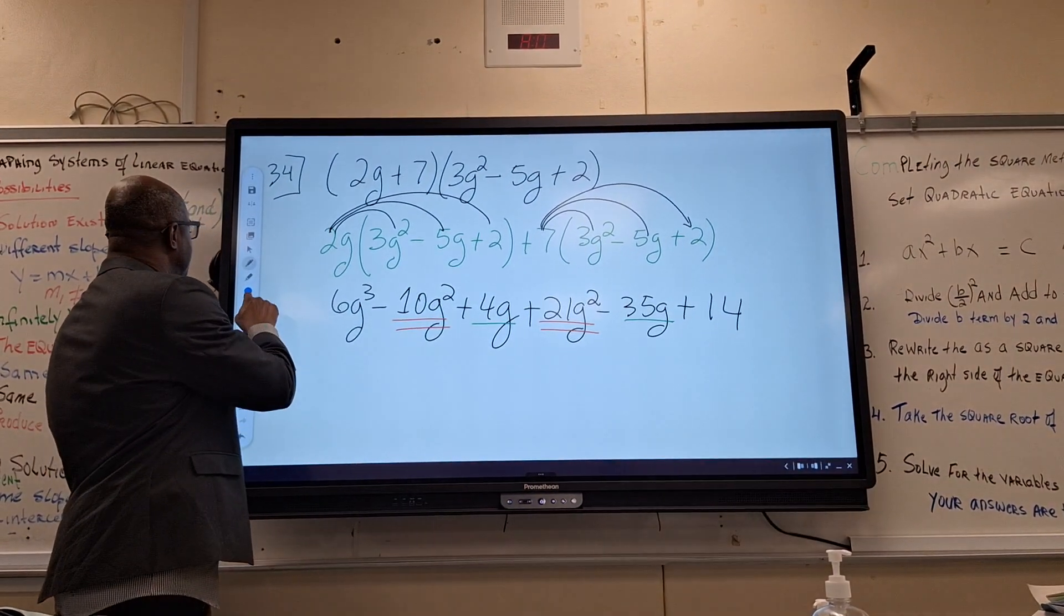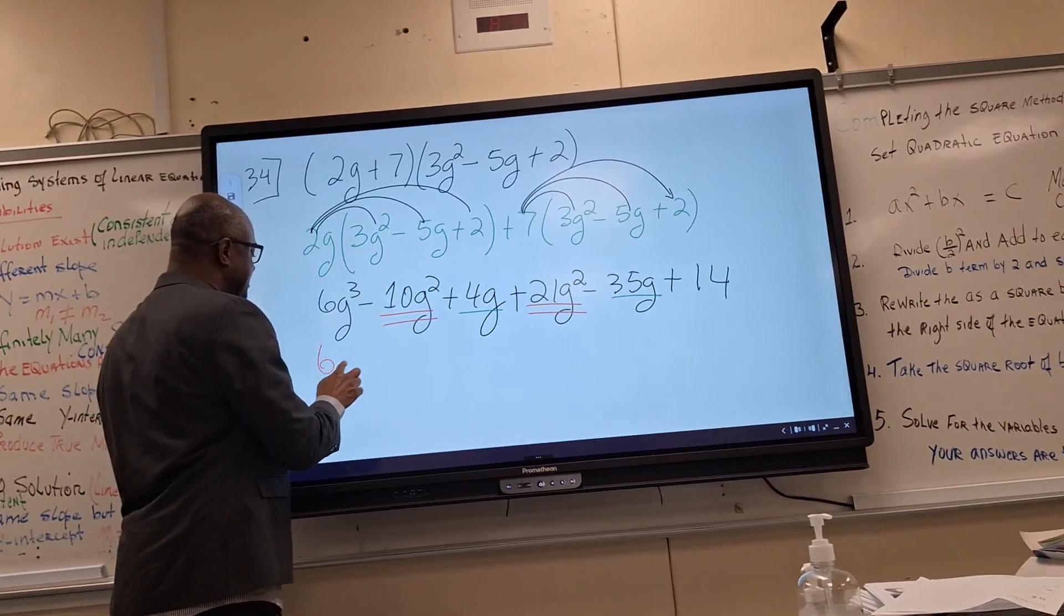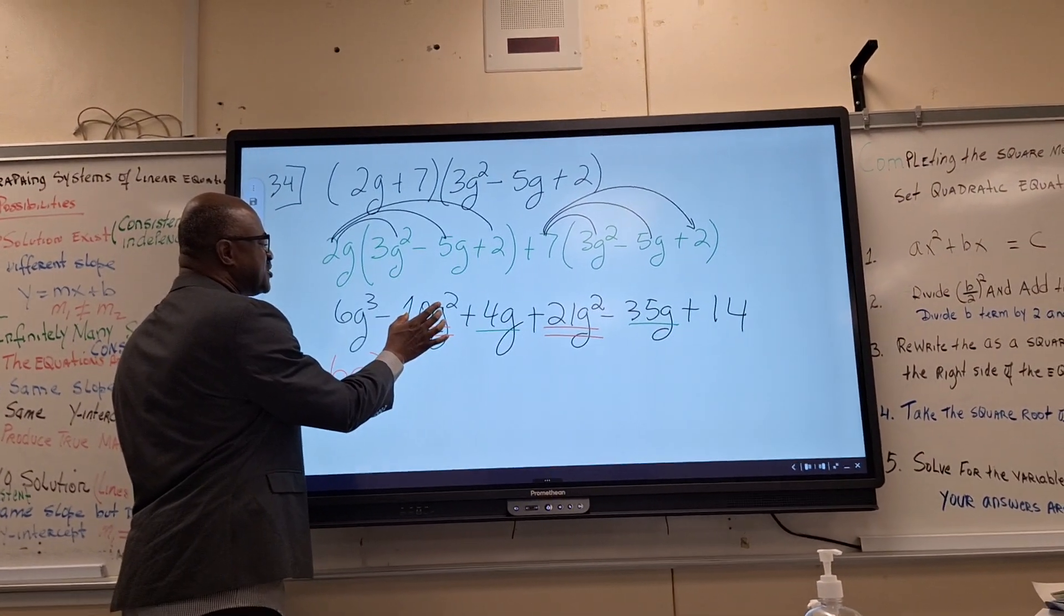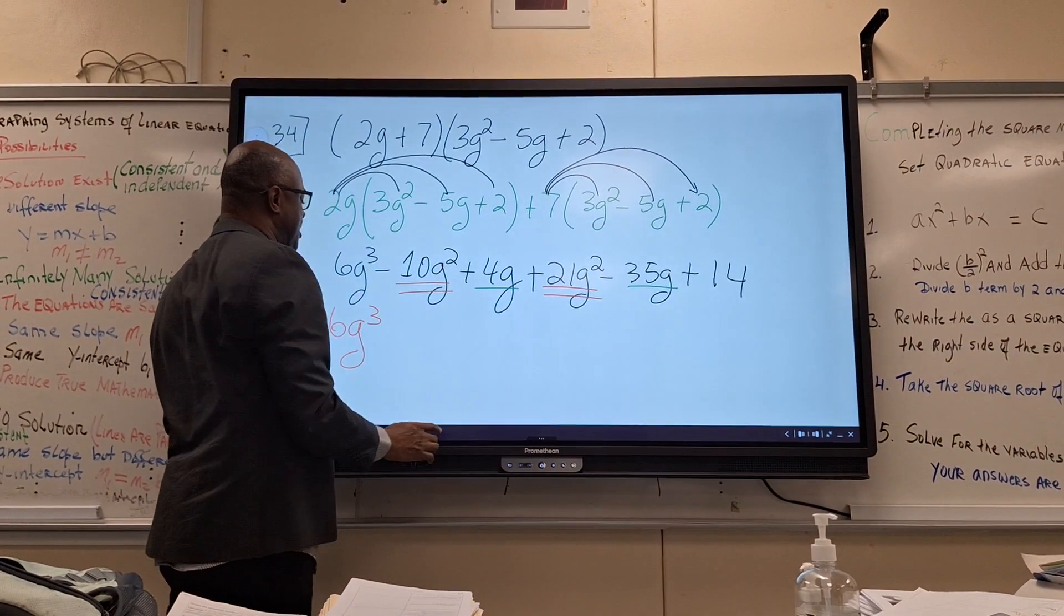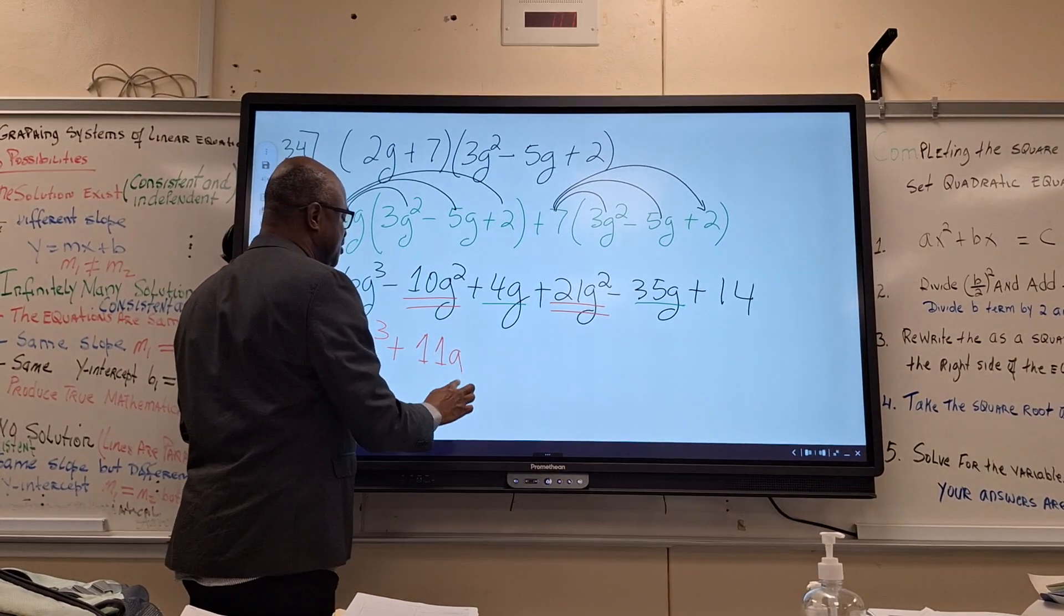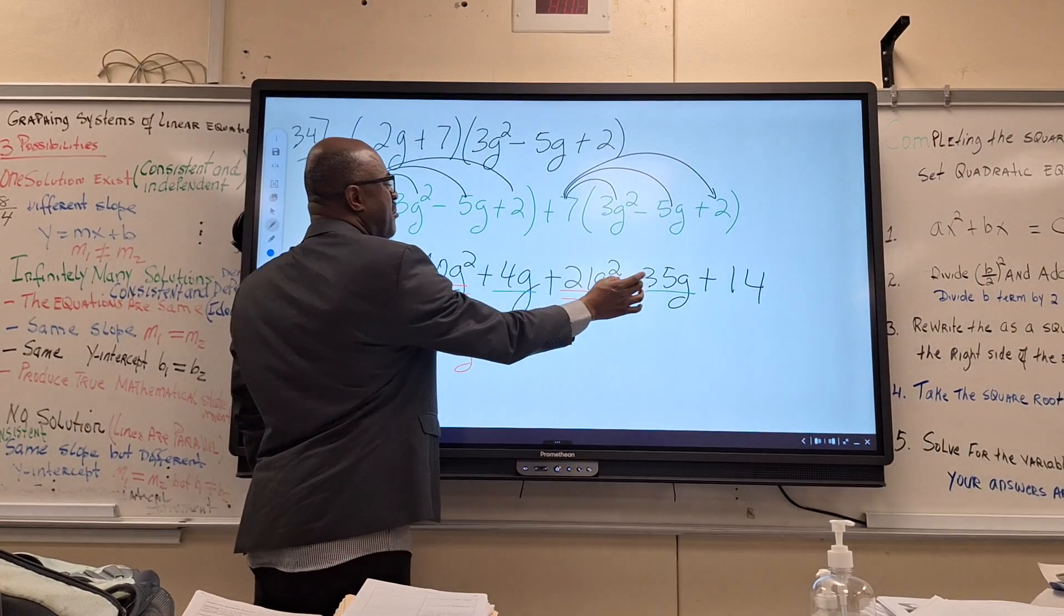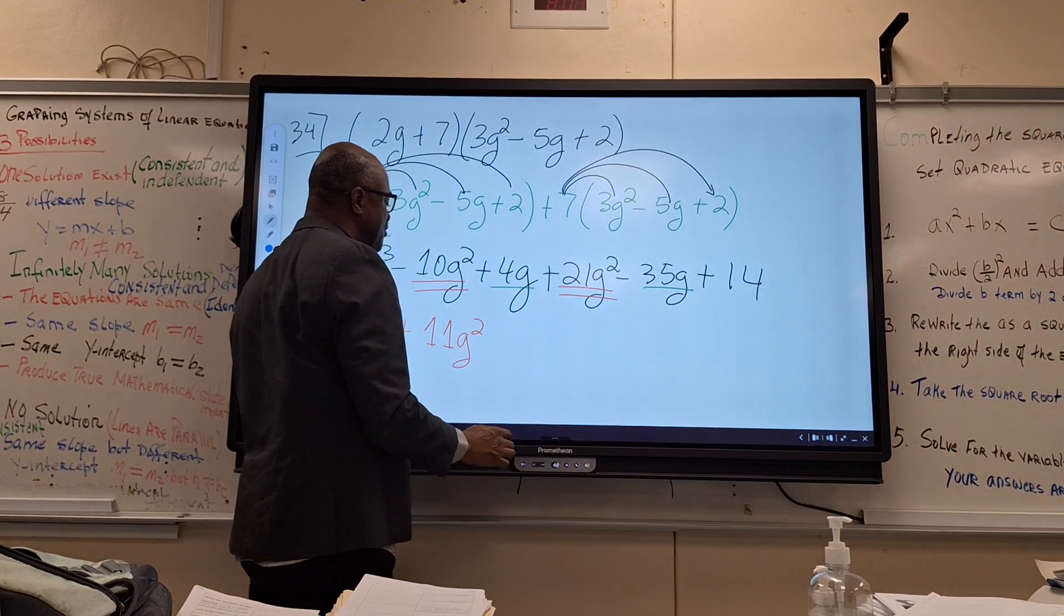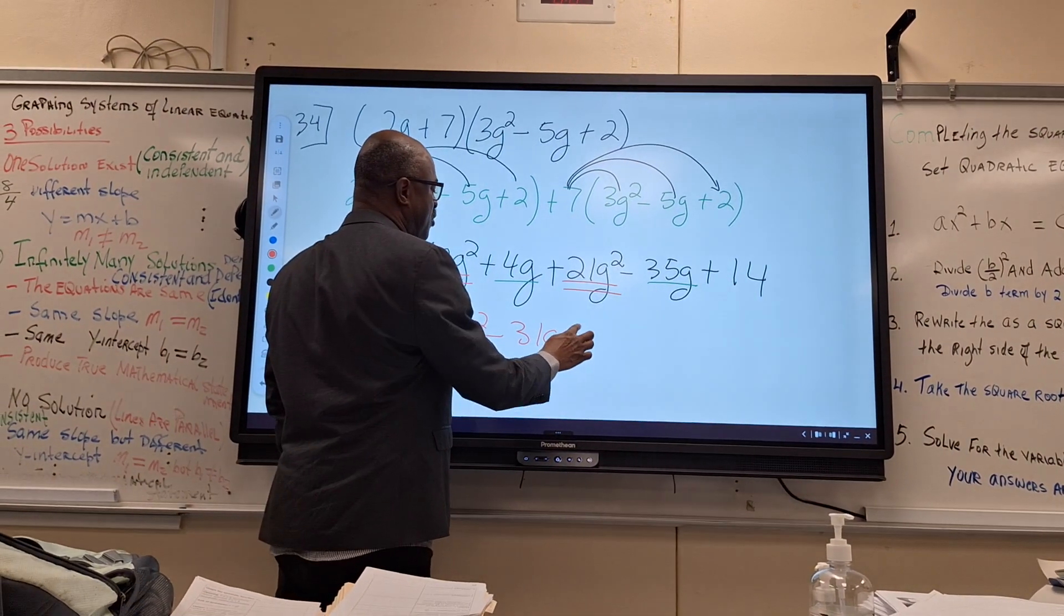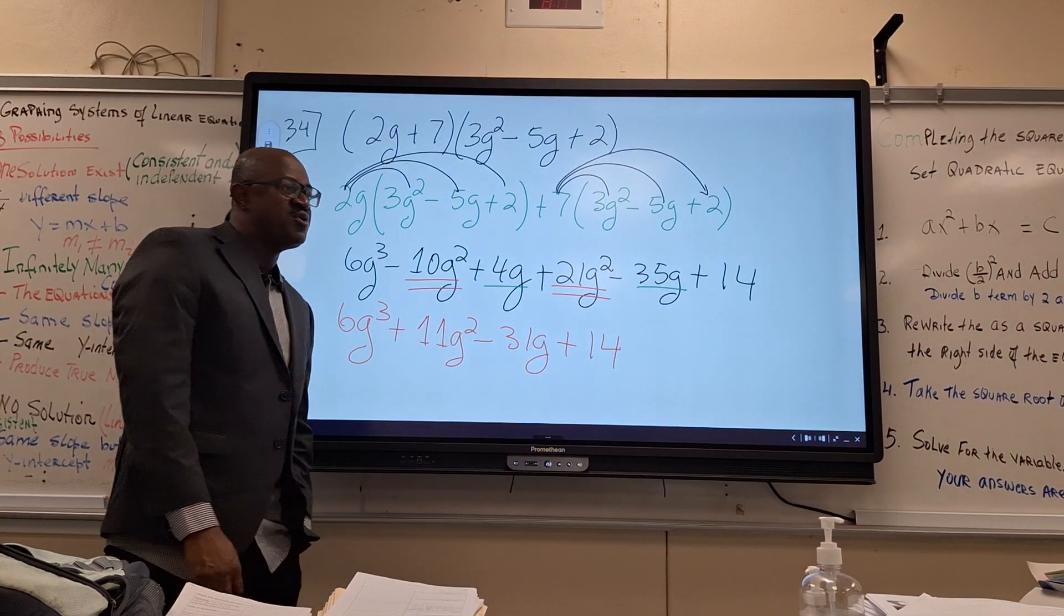Everything else remains unchanged. Then we'll end up with 6G cubed. And what is minus 10G squared plus 21G squared? We'll give you plus 11G squared. And you have 4G minus 35G will give you minus 31G plus 14. You're home sweet home. You're done.